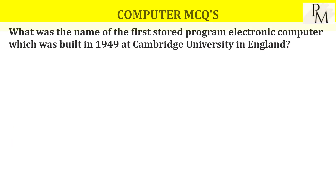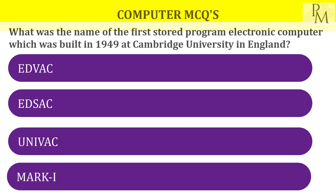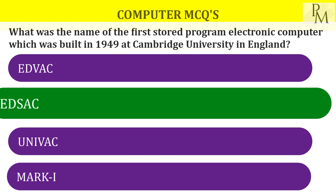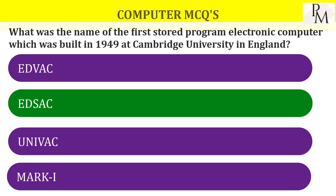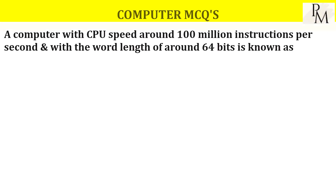What was the name of the first stored program electronic computer which was built in 1949 at Cambridge University, England? The name of the first stored program computer at Cambridge University, England is EDSAC. The answer is EDSAC.